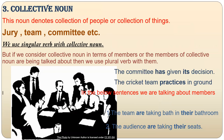Next is collective noun. In collective noun, we talk about a collection of people or a collection of things — for example, jury, team, committee. These are all collections of people, and we use the singular verb because we are talking about everything in one unit. But if we talk about the committee's decision collectively — 'The committee has given its decision' — we use the singular verb. But if we talk about individual members, we use the plural verb, like 'The team are taking bath in their bathroom.' Here the team is not used as one unit, so we use the plural verb.